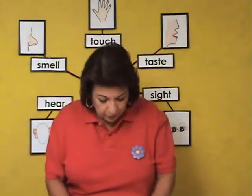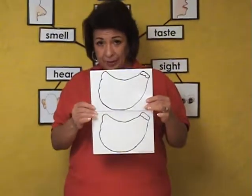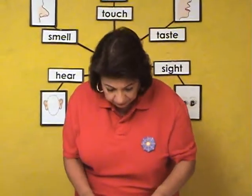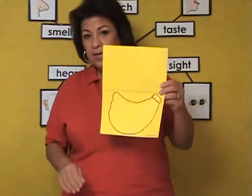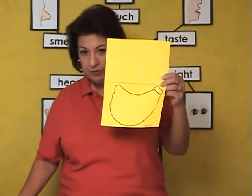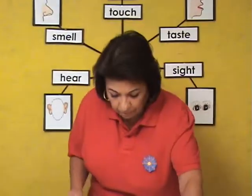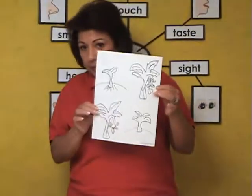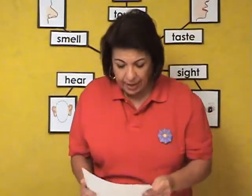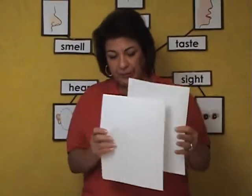The materials needed for this activity are the banana pattern that will be duplicated onto a yellow sheet of construction paper, the sequence picture cards, and two white sheets of copied paper.